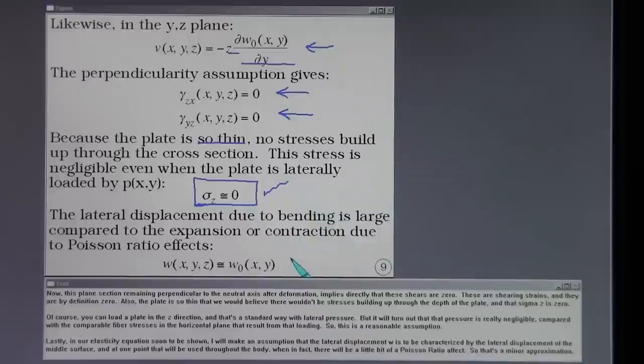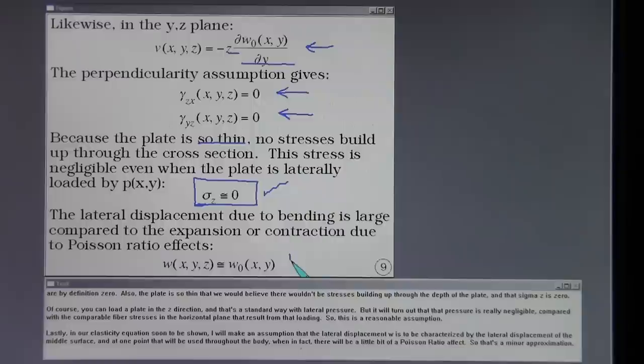Lastly, in our elasticity equation soon to be shown, I will make an assumption that the lateral displacement W is to be characterized by the lateral displacement of the middle surface, and at one point that will be used throughout the body. When in fact, there would be a little bit of a Poisson ratio effect, so that's a minor approximation.